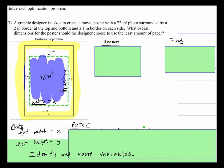So let width equal x, let height equal y. But this is what we know. We know that the area of the photo is 72 inches squared and we also know that the area is equal to the width times the height.